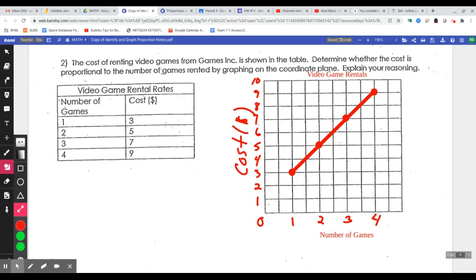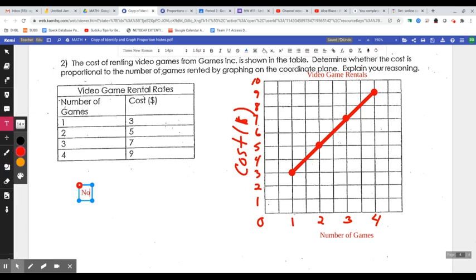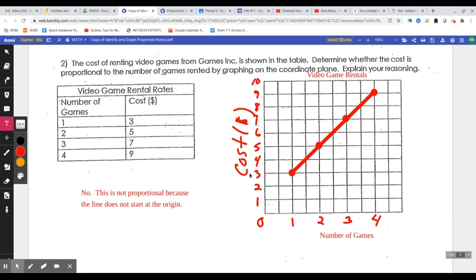But it's not starting at zero, zero. So I guess this one is a no, too. So I'm going to say, no, this is not proportional because the line does not start at the origin. Okay. So if that was my picture, that would be my logic. And that is correct.